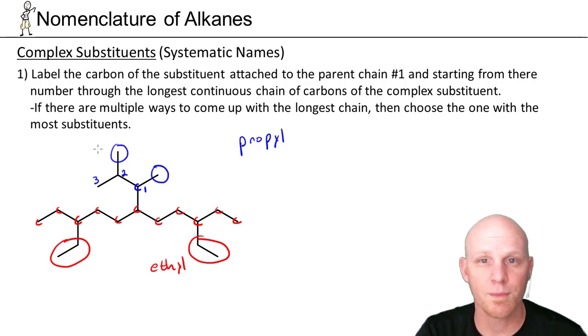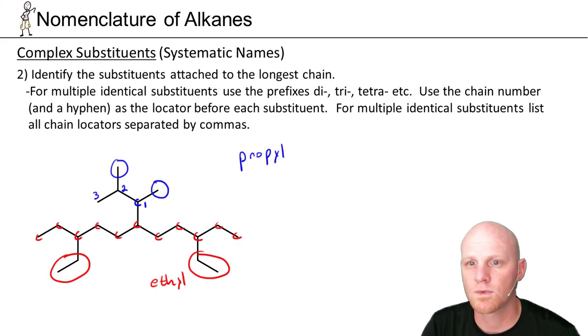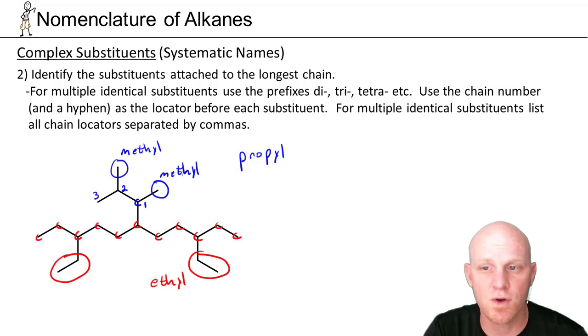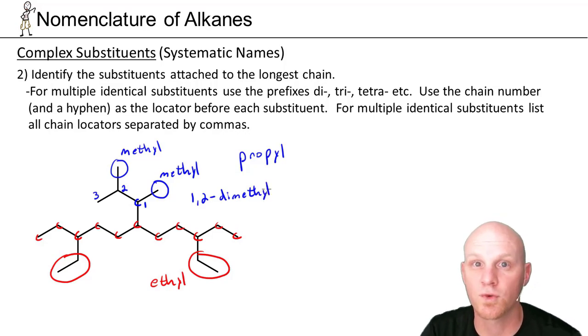So rule number 2 deals with identifying the substituents attached to that longest chain. And in this case, we've got just a couple of simple methyl groups attached. And in this case, because there's two of them, we are going to say dimethyl as part of the name. And we're also going to use these chain locators. So here, one's at carbon 1 and one's at carbon 2 of the substituent. And so we're going to say something akin to 1, 2 dash dimethyl. Let's move on to rule number 3.